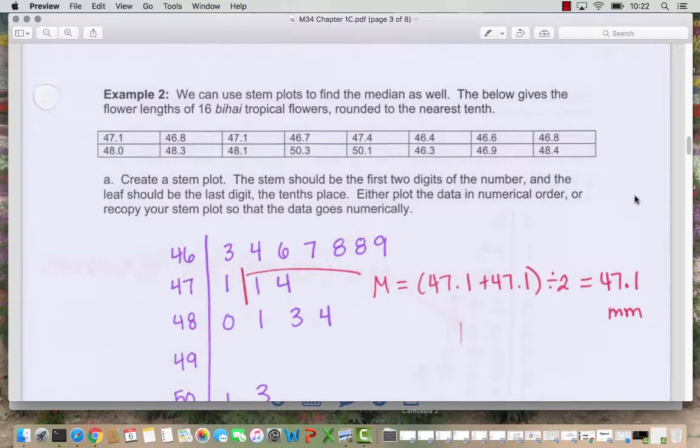We can also use stem plots to find the median. I think stem plots are great technique if you have just a little bit of data or if you are without a calculator or computer. So here is the flower lengths of 16 beehive tropical flowers rounded to the nearest tenth and these are measured in millimeters. And we're going to create a stem plot. So we're told the stem should be the first two digits of the number and the leaf is the last digit which is in this case the tenths place.